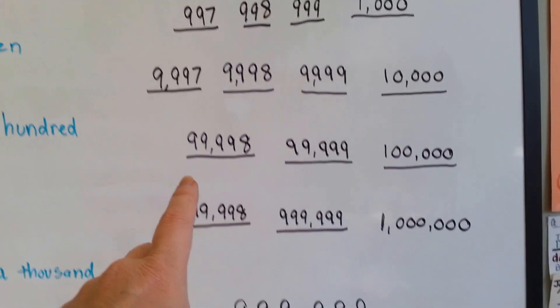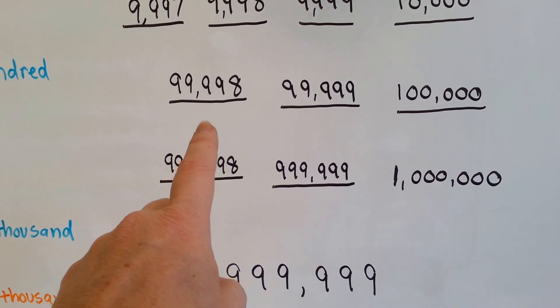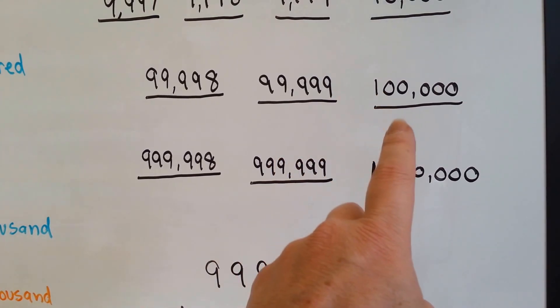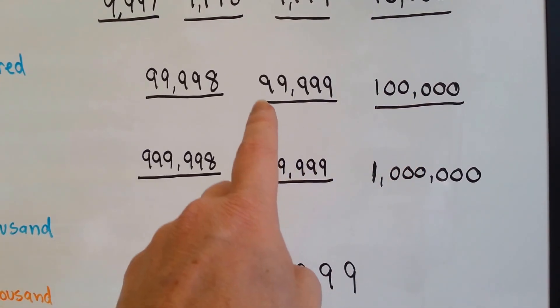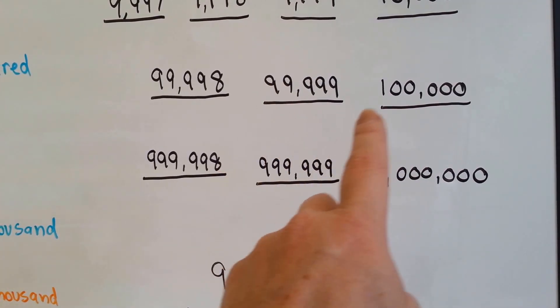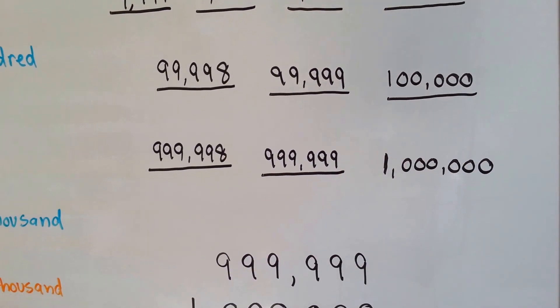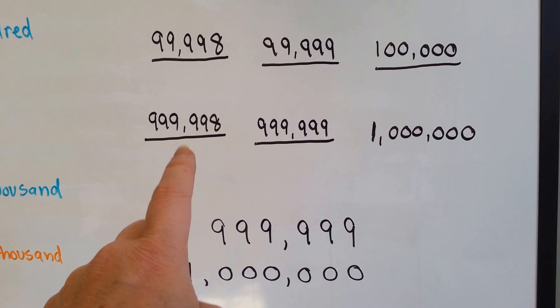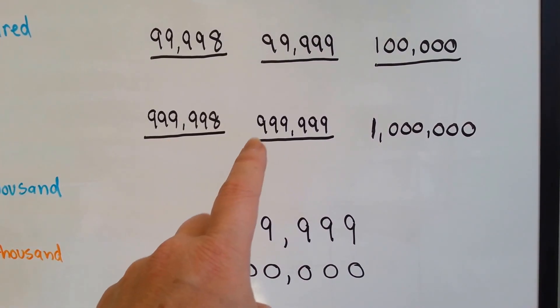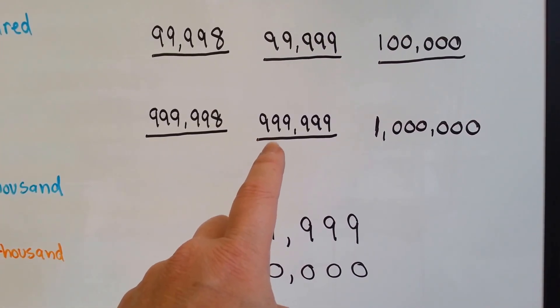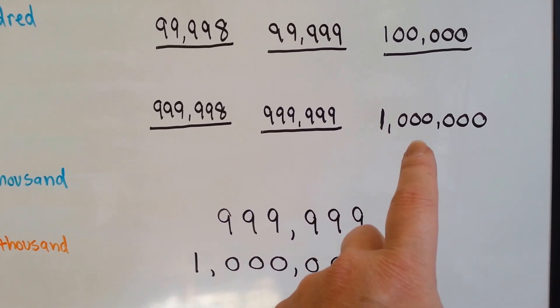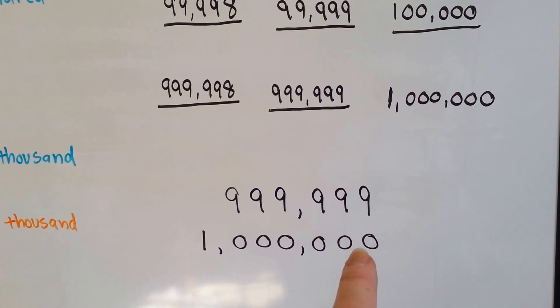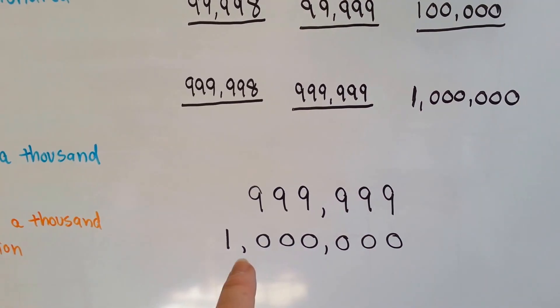How about here? 99,998, 99,999, 100,000. See how this is a 99 and it turned into a 100? How about here, 999,998, 999,999, 1,000,000 is the next number. One digit more turns it into a million.